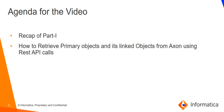In Part 1 we discussed that in order to make any REST API calls in Axon, we first need to have the JWT token. The first call we make is to get the JWT token from Axon, and once we get it we can proceed further. Please refer to video one where I have explained how to retrieve the JWT token from Axon. Once you have the token, we can proceed to retrieve primary objects and their linked objects.